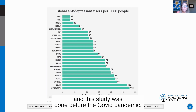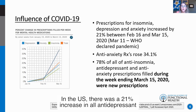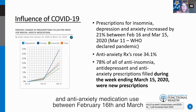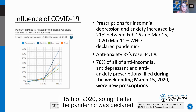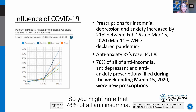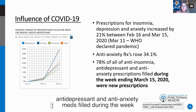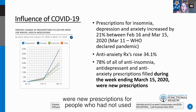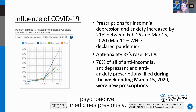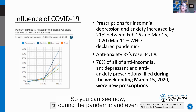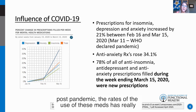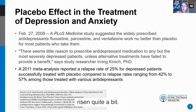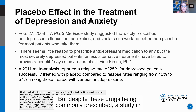This study was done before the COVID pandemic. In the U.S., there was a 21% increase in all antidepressant and anti-anxiety medication use between February 16th and March 15th of 2020 — right after the pandemic was declared. About 78% of all anti-insomnia, antidepressant, and anti-anxiety medications filled during the week ending March 15th, 2020 were new prescriptions for people who had not previously used psychoactive medicines.